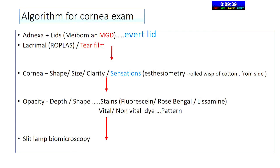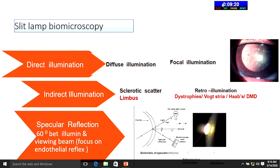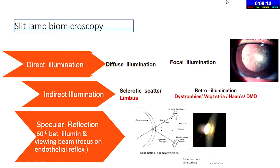For corneal assessment, evaluate shape, clarity, size, and sensations. You may not have an aesthesiometer or cotton wisp — tell the examiner 'I wanted to take sensations but could not.' Carry your fluorescein with you just in case the examination hall doesn't have one. For slit lamp, there are seven types of examination: direct, diffuse, focal, indirect, specular, sclerotic scatter, and retroillumination.